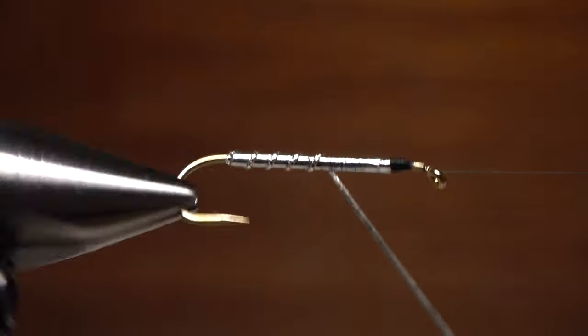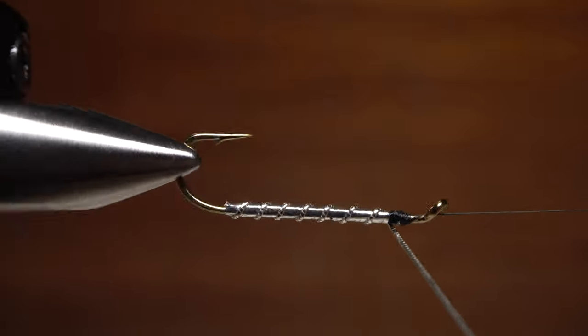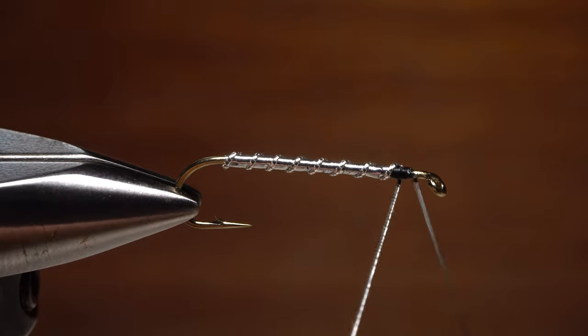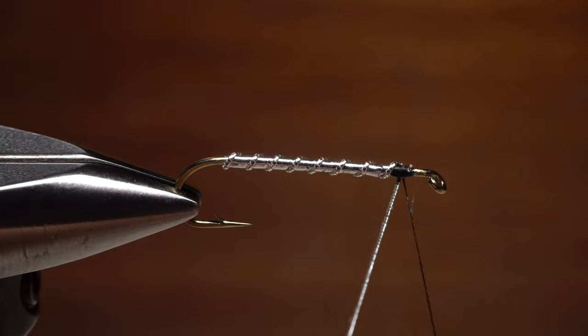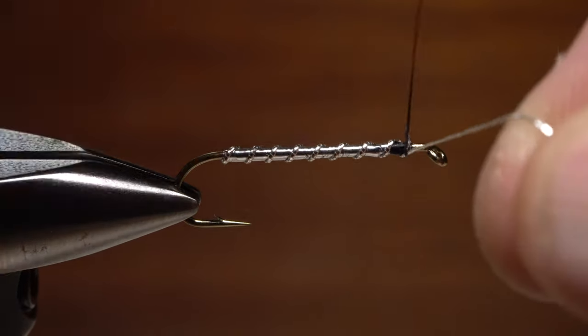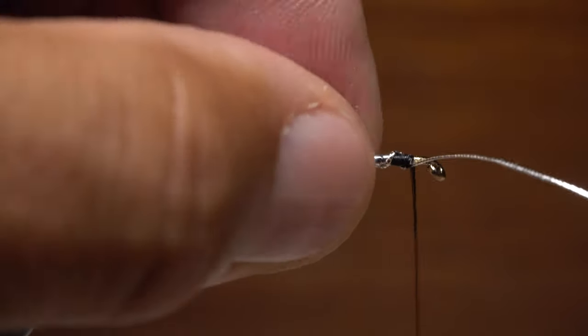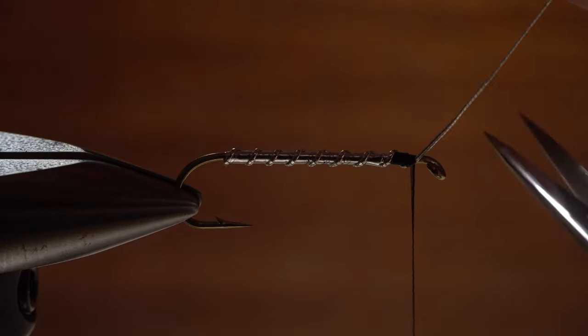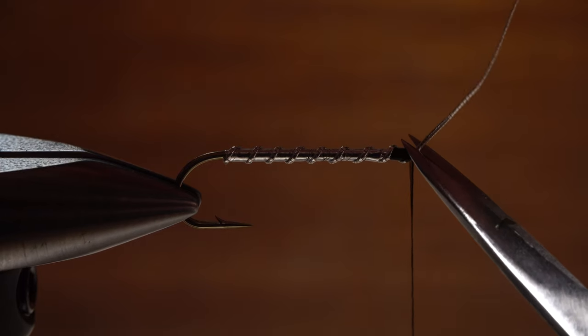Doing it in this manner usually produces nice evenly spaced wraps all the way up the shank to the tie-in point. There, you can retrieve your bobbin from the cradle and use wraps of tying thread to anchor the tinsel rib. When you're done, snip the excess off close.